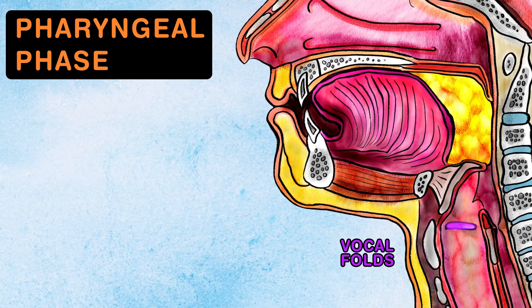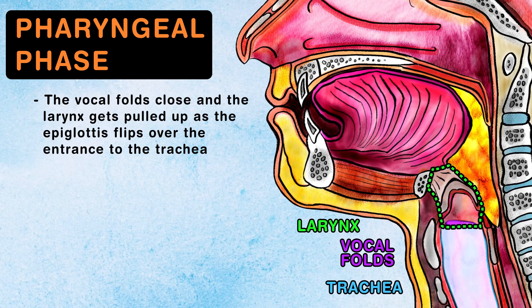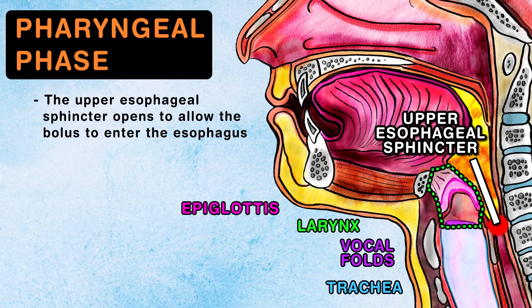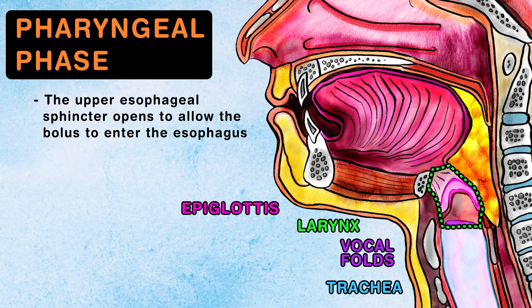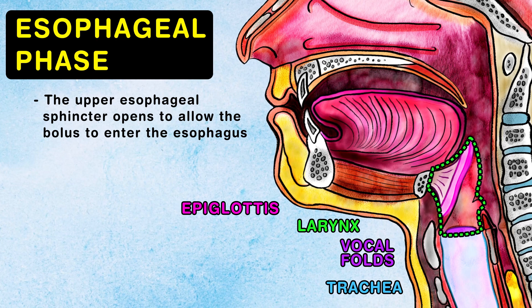The vocal folds are located in the larynx, which is at the top of the trachea. The vocal cords close and the larynx gets pulled up as the epiglottis flips over the entrance to the trachea. The upper esophageal sphincter opens to allow the bolus to enter the esophagus.